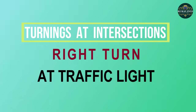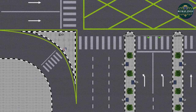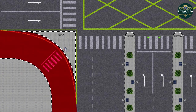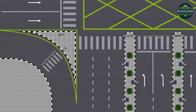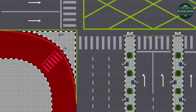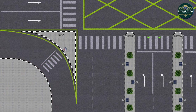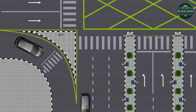Right turn at traffic lights. Mostly traffic light intersections have slip lanes that are used to turn right without actually entering the intersection. Therefore, to make a right turn from the traffic light, motorists must use the slip lane if available. While approaching towards the slip lane, follow the MSPSL routine.